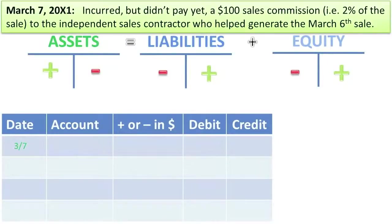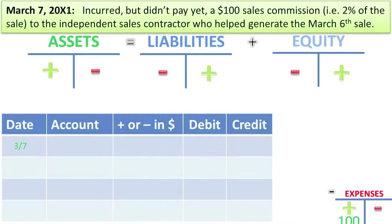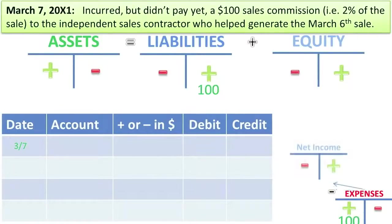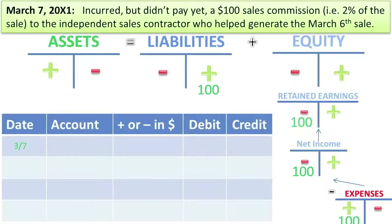March 7th: incurred but didn't pay yet a $100 sales commission — 2% of the sale to the independent sales contractor who helped generate the March 6th sale. 2% of $5,000 is $100. In this case we have to recognize an expense related to the sale — more commission expense. But we haven't paid yet, so we are not going to reduce our assets. We do have to say we owe more — commissions payable. This expense rolls up into net income by reducing net income, retained earnings will be reduced, and overall equity will be reduced. So liabilities go up $100 and equity goes down $100.